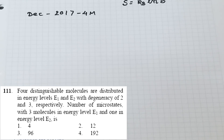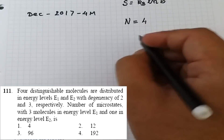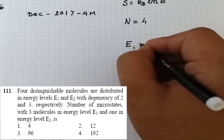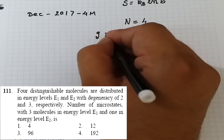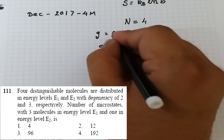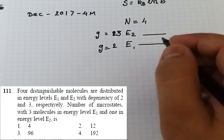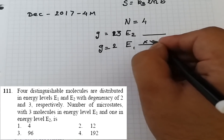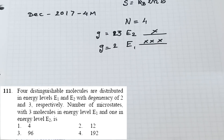We must calculate the number of microstates with three molecules in energy level e₁ and one molecule in energy level e₂. Total molecules N = 4, degeneracy g₁ = 2 for e₁, g₂ = 3 for e₂, with n₁ = 3 molecules in e₁ and n₂ = 1 molecule in e₂.